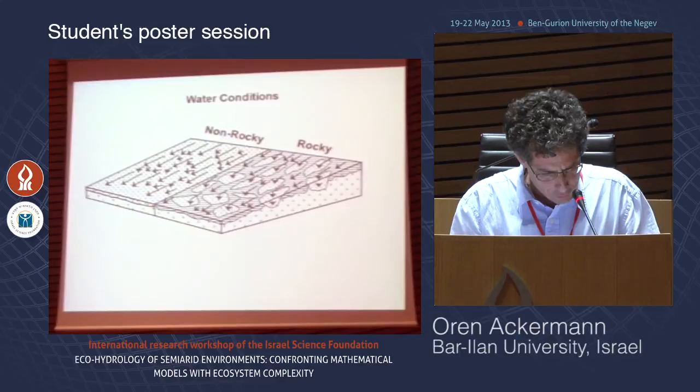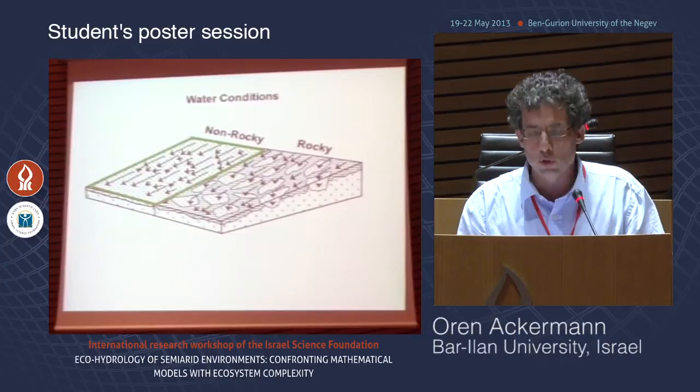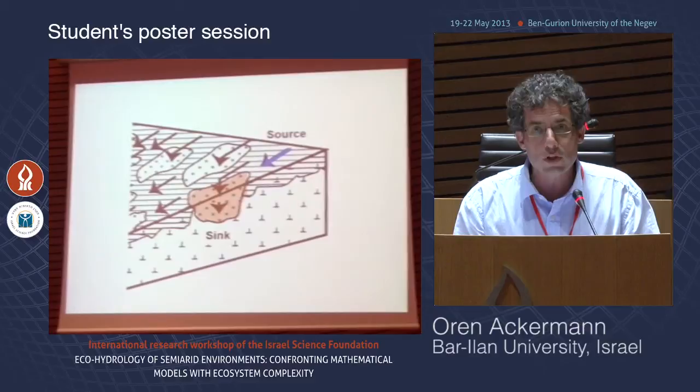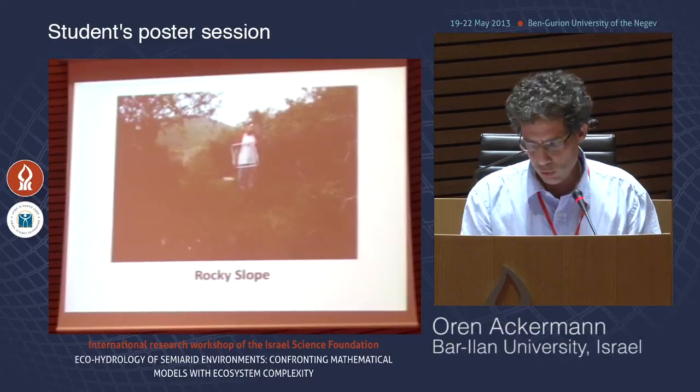We suggest that the different vegetation pattern may be related to different water conditions on the two surfaces. On the non-rocky surface, there are low runoff and low water conditions, while on the rocky surface, water conditions are enhanced due to the presence of rock outcrop, which acts as a source for runoff generation. The runoff is absorbed in the soil pocket, which acts as a sink, allowing higher vegetation to be established.